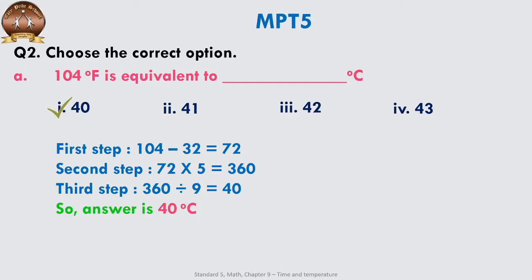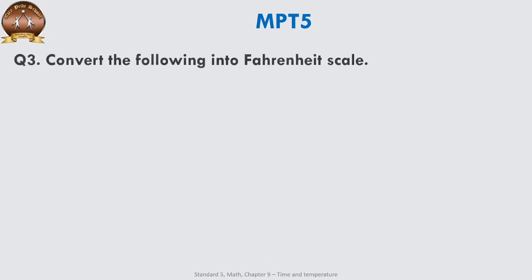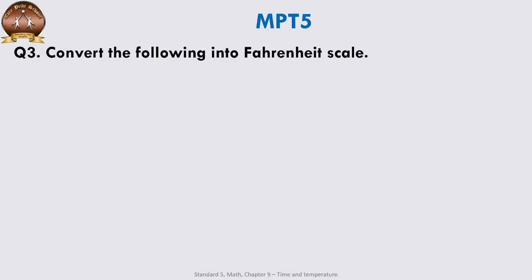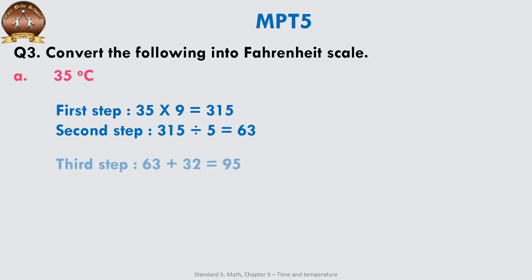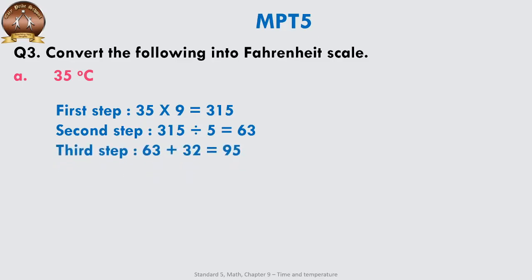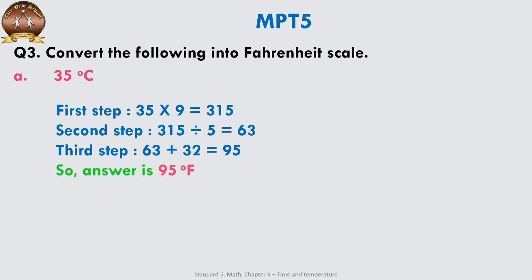Now convert 35°C into the Fahrenheit scale. Step 1: 35 × 9 = 315. Step 2: divide by 5 — you get 63. Step 3: add 32 — you get 95. So the answer is 95°F. The steps are: multiply by 9, divide by 5, then add 32.